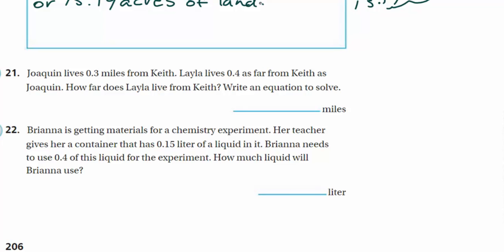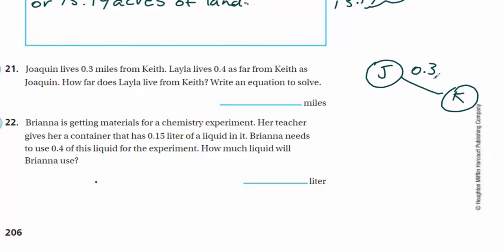Joaquin lives 3 tenths of a mile from Keith. Layla lives 4 tenths as far from Keith as Joaquin. How far does Layla live from Keith? Write an equation to solve. Well, let's slow this problem down. Let's just say this is Joaquin's house. He's got a circle house. And then we have Keith over here. They're saying that that distance there is 3 tenths of a mile. This is just distance. Layla lives 4 tenths as far from Keith as Joaquin. So whatever that distance is, which is 3 tenths, she lives 4 tenths as far. We can take our 3 tenths and we can multiply it with 4 tenths. We end up with 12. Is that reasonable? No. We have two decimal places. So now we're going to end up with an answer as 12 hundredths miles.